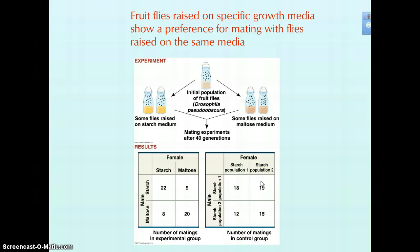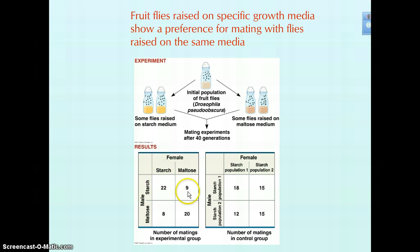This was a nice example of how we can sort of induce some of these changes even in lab. They took an original fly population and grew them on different media — either a starch-based medium or a maltose-based medium. After a number of generations there was a clear preference in mating for organisms raised on the same type of medium. It shows evidence of how you can induce restrictions on gene flow or induce mate preference in populations, with individuals raised on the same medium preferring one another over individuals raised on different media.